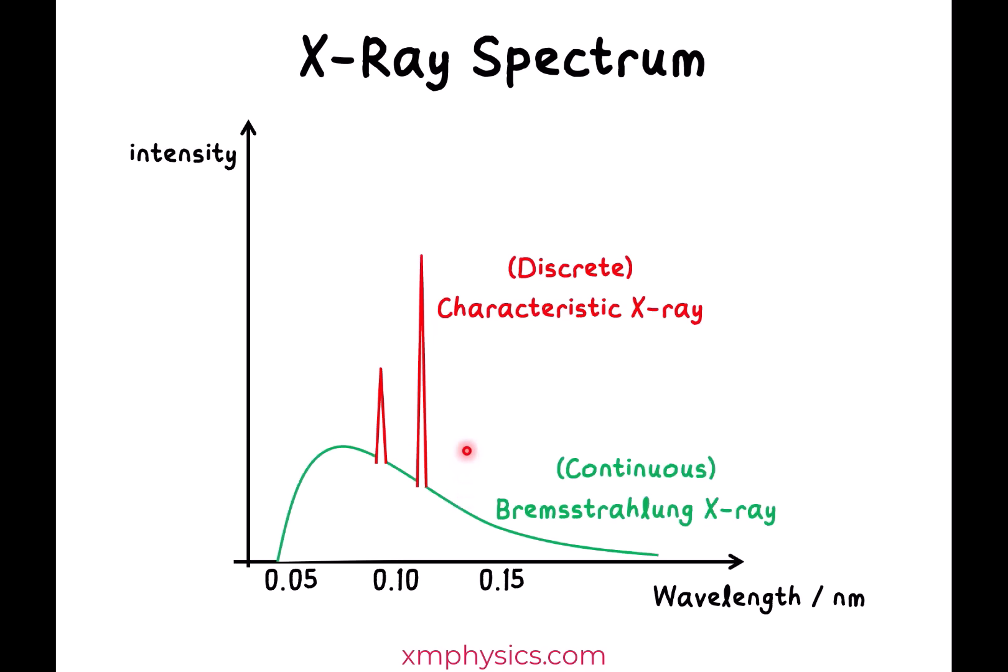The reason an X-ray spectrum has both a discrete component and a continuous component is because two different mechanisms of producing X-ray photons are taking place at the same time in the tungsten atom. Let me start by explaining the characteristic X-ray first.